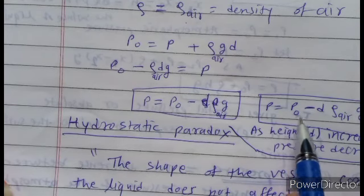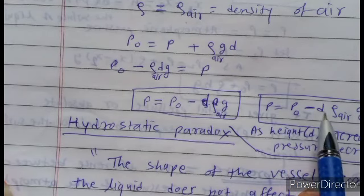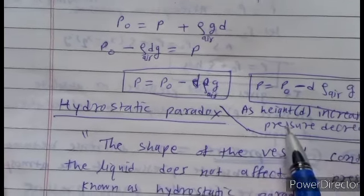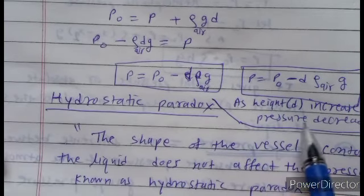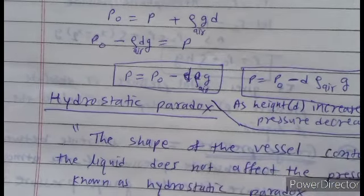Substituting values, P0 = P + ρ_air·g·d, so P = P0 − ρ_air·g·d. As height increases, pressure decreases.